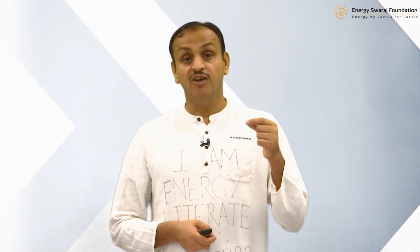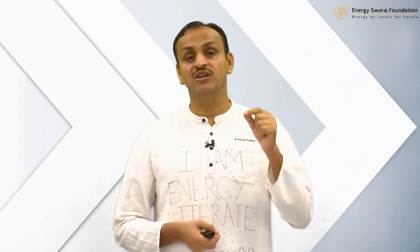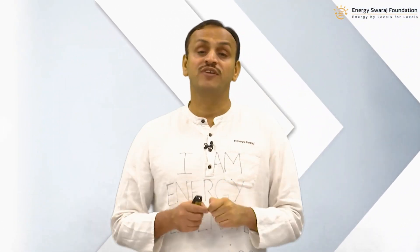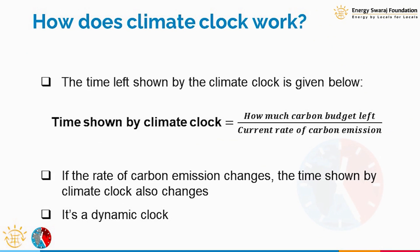So basically it is a countdown clock that tells you how much time is left. Just like a normal countdown clock where every second you see the time going down, similarly this 1.5 degree centigrade climate clock is also a countdown clock. How this time is derived is very interesting.